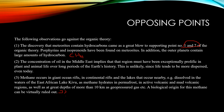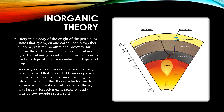Next we move on to the inorganic theory. According to the inorganic theory, hydrogen and carbon came together under great temperature and pressure far below the earth's surface to form oil and gas. The oil and gas then seep through porous rocks to deposit in various natural underground traps. As early as the 16th century, one theory claimed that oil resulted from deep carbon deposits that have been around longer than life on this planet. This came to be known as the abiotic oil formation theory, which was largely forgotten until rather recently when it was reviewed again.